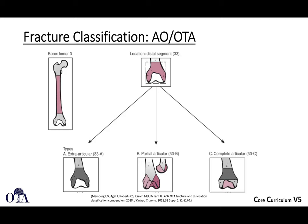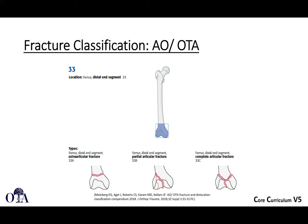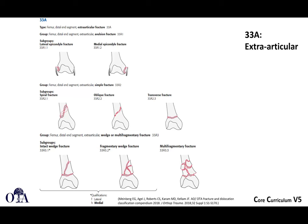For the 33A extraarticular fracture, a comminuted pattern may be treated with bridge plating or retrograde intramedullary nailing, while a simpler fracture may be treated with anatomic compression plating or an intramedullary nail. The partial articular B-type fractures — in AO courses they teach 'B is for buttress' — are typically treated with a buttress plate for lateral condyle B1s, and interfragmentary screws with buttress plating medially for B2s.